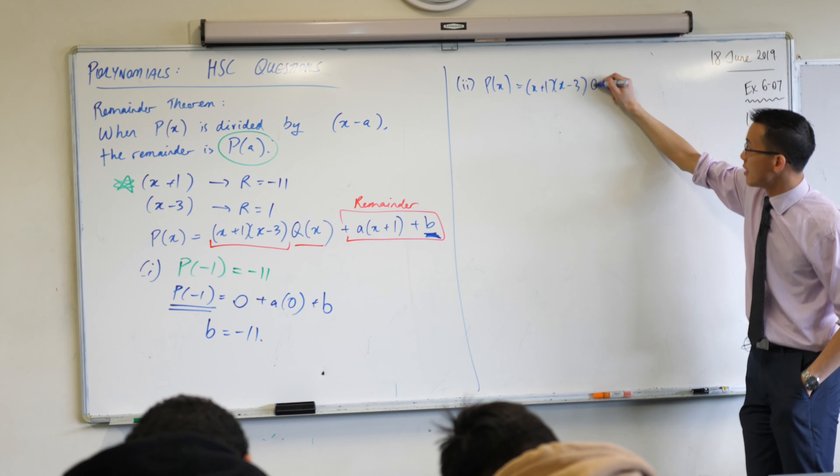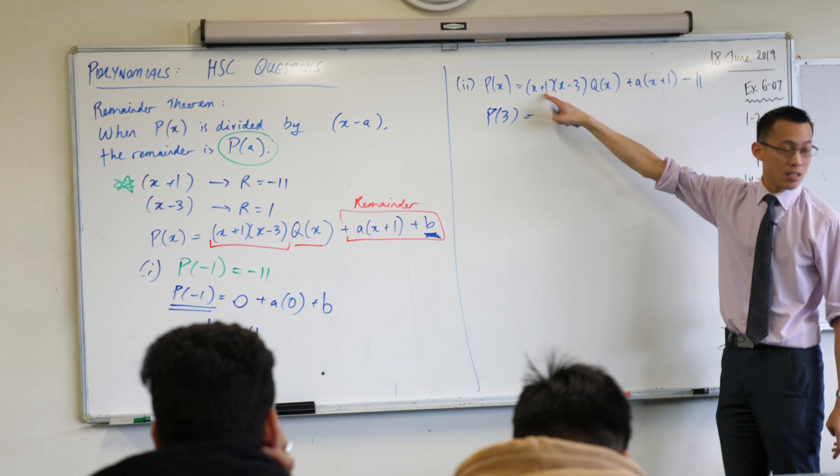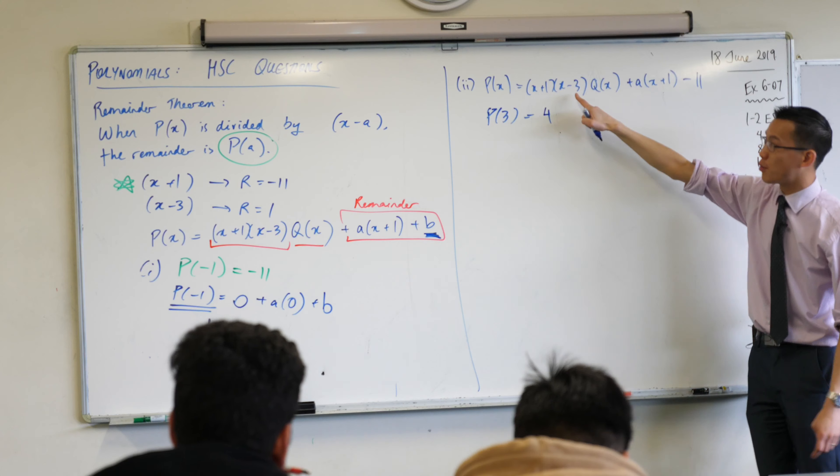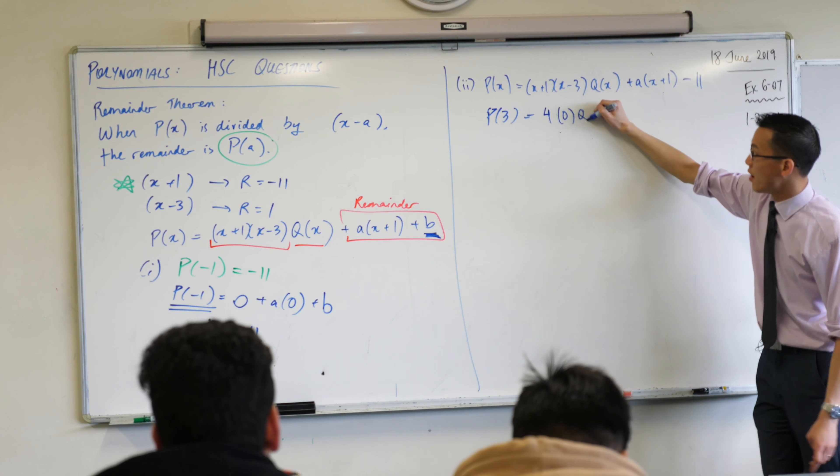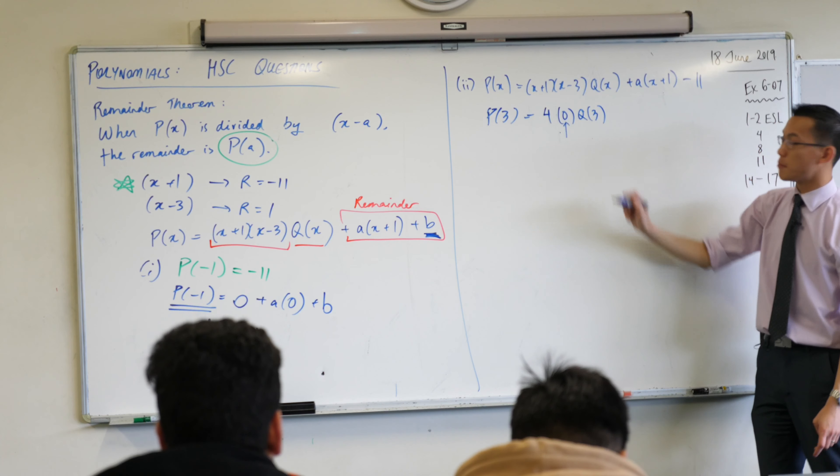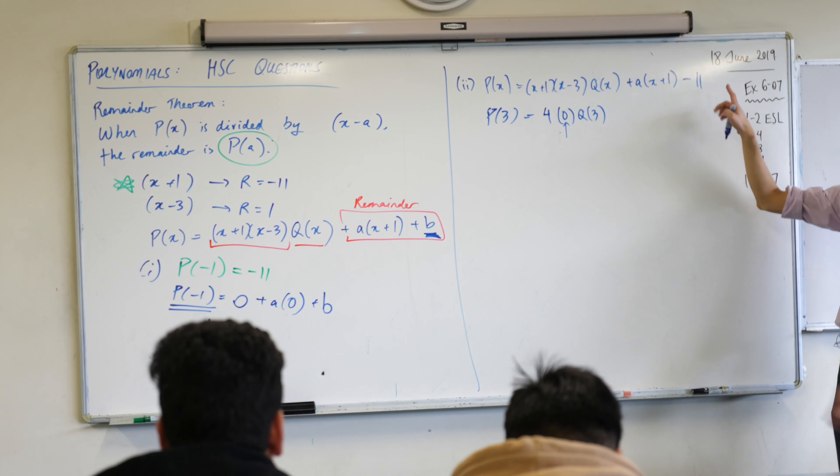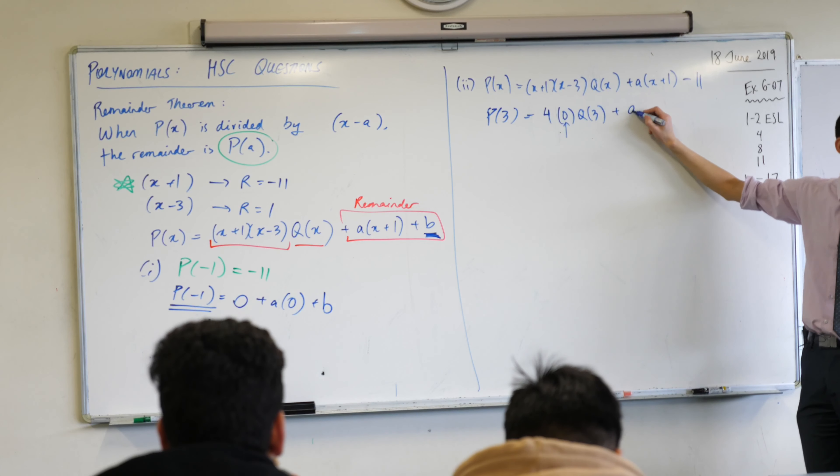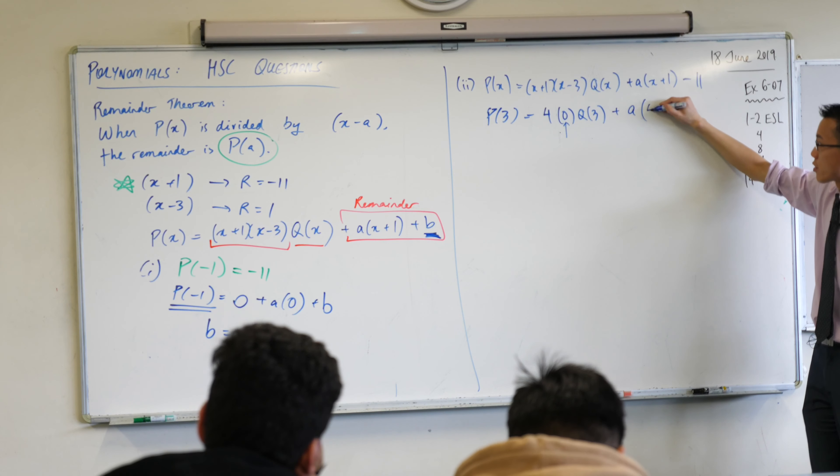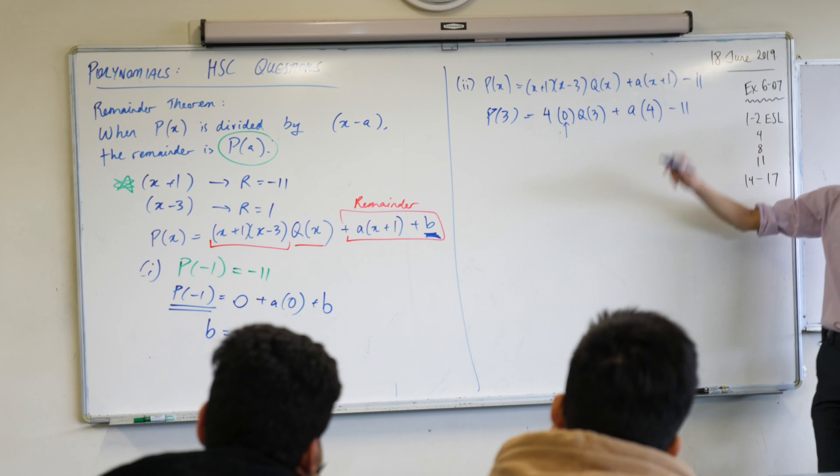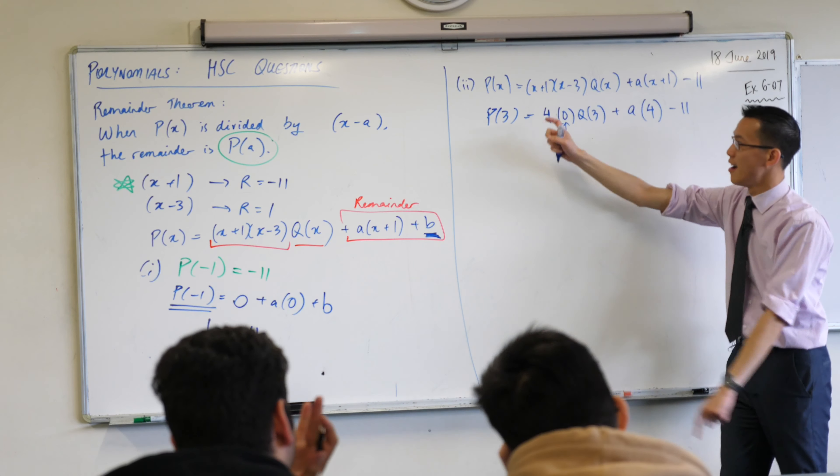So I'm going to write down therefore P(3) equals, and I'm going to do the same substitution I did earlier. You're now starting to see why this was written in such a weird awkward way. When you put in 3 into here you get 4, but when you put 3 into here you get 0, so you actually don't care what the rest of it is - it's all going to get multiplied by 0. I do have to worry about this. So you end up with a times 4 (3+1), and then that minus 11 is hanging out on the end.